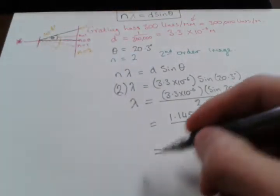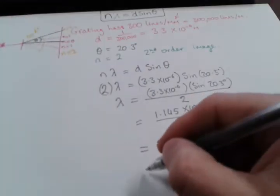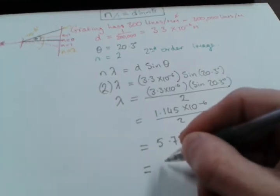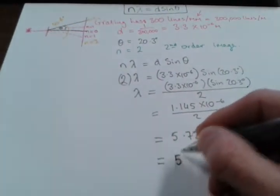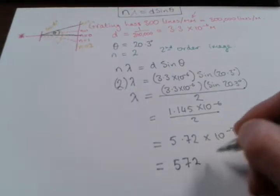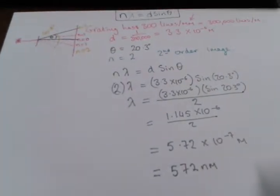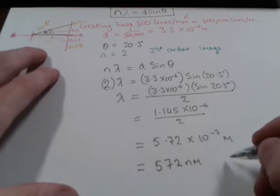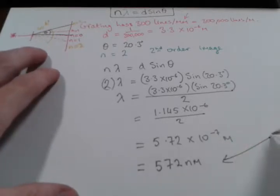Now, often this is written slightly differently - you can see the answer there on the calculator. Often this is written slightly differently. It may be written as 572 nanometers. That would be the normal way that physicists or scientists would talk about wavelengths of visible light, and this is going to be visible light.